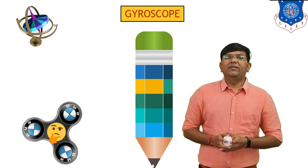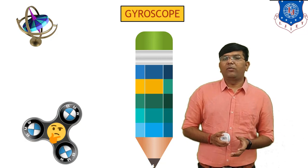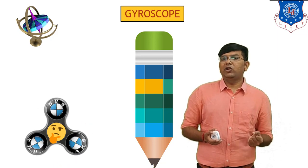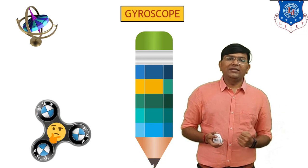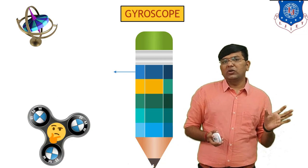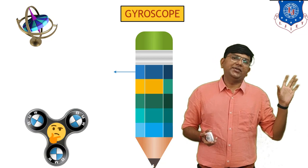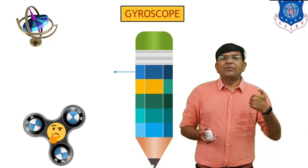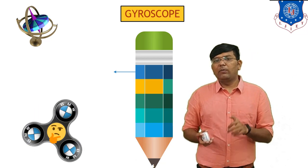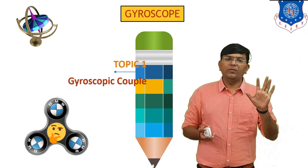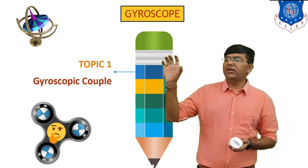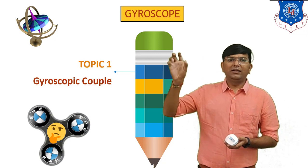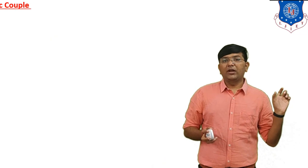Hello friends, myself Myoon Kodya from LGA Institute of Engineering and Technology. In the last session we started a new chapter on Gyroscope, discussed some basic applications and fundamentals — what is the function of a Gyroscope. In today's session, we will derive the equation for the Gyroscopic Couple.